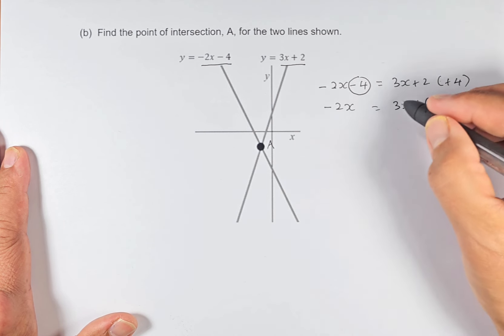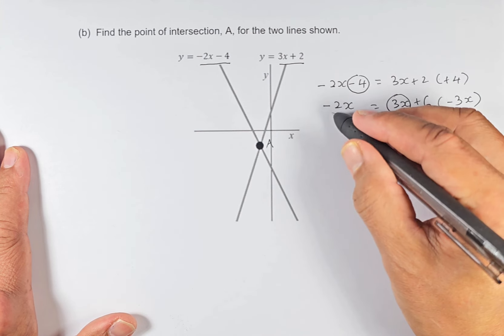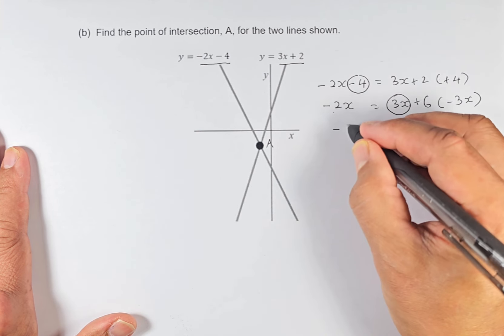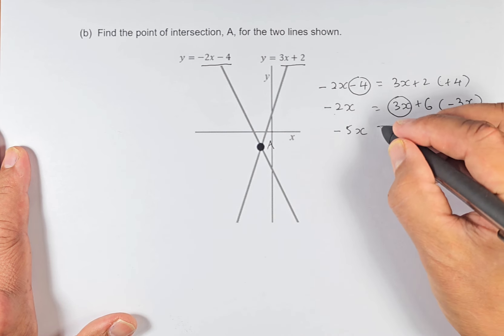Next, we're going to get rid of the 3x because 3x shouldn't be on the right-hand side. We subtract 3x from both sides of the equation. When we subtract 3x, -2x - 3x becomes -5x. 3x - 3x will cancel out and we get 6.